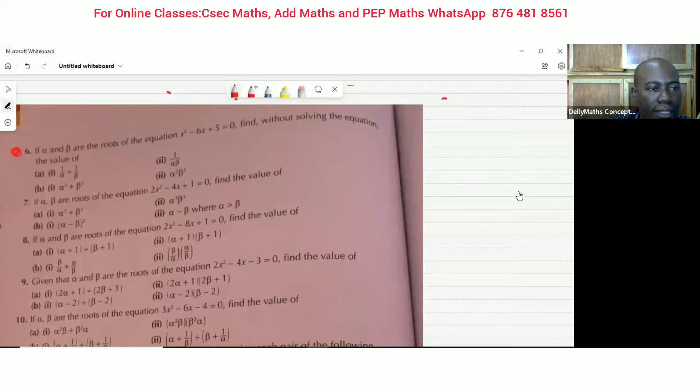It says, if alpha and beta are the roots of the equation x squared minus six x plus five equals zero, find without solving the equation the value of all of these that we're going to be doing, A, B, C, and D. So we're going to try to do those four.